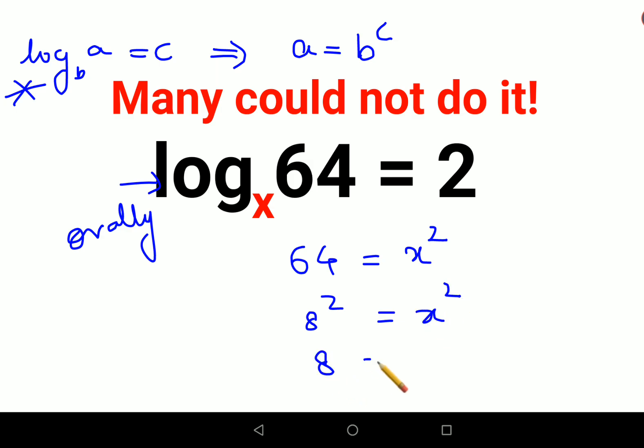Now please understand in logs the base or the main value or main argument cannot be negative. So here I did not do plus minus. If it was not log, you could have taken or you should take the negative and the positive value both, especially when you're taking the square root.